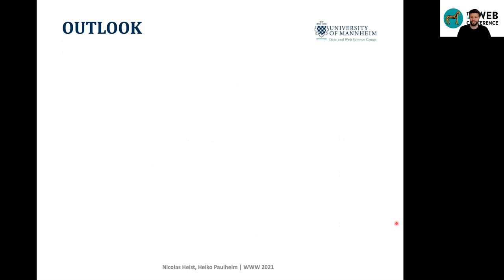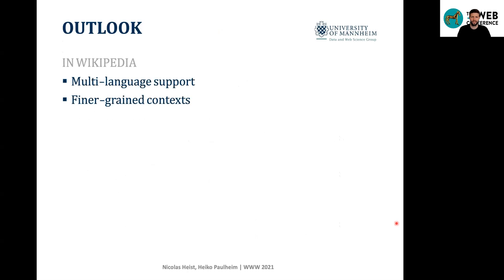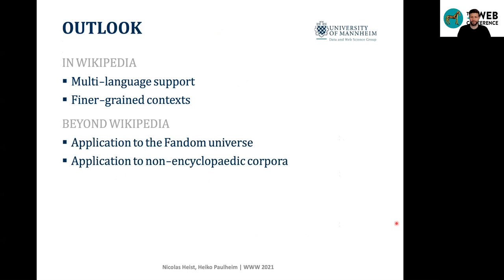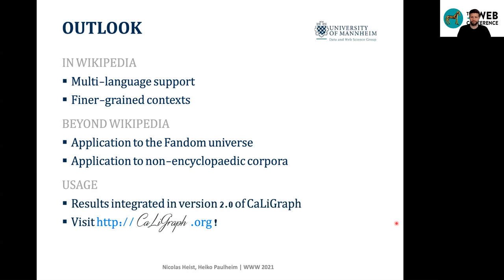For future work, we see several directions for extension. For Wikipedia itself, we want to explore multi-language support and experiment with finer-grained context beyond just the page entity and sections. Beyond Wikipedia, it would be interesting to apply the approach to other corpora like wikis in the Fandom universe or non-encyclopedic corpora. Thank you for watching.